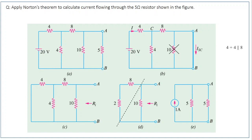If the resistors were not equal, you would calculate the total parallel resistance, find the voltage drop across the combination (voltage is constant in parallel), then divide by the load resistance to get the load current. You can work out this problem as an assignment. In tomorrow's class we will learn about the maximum power transfer theorem. Thank you.